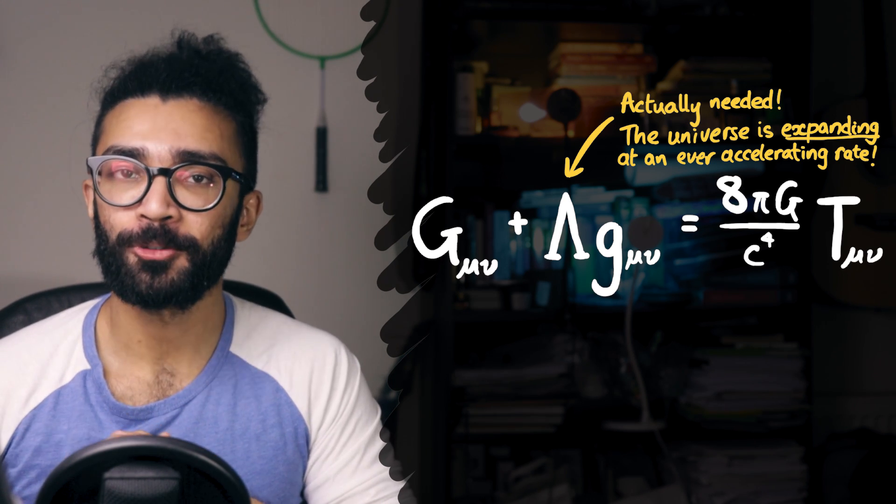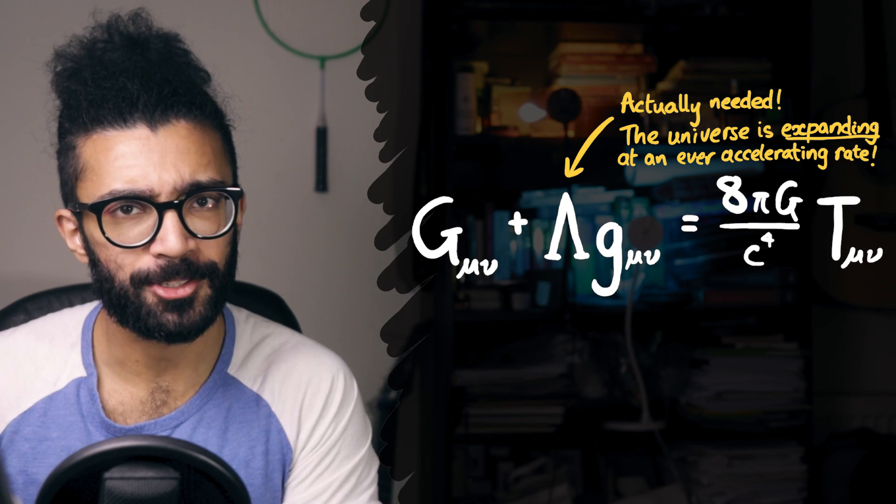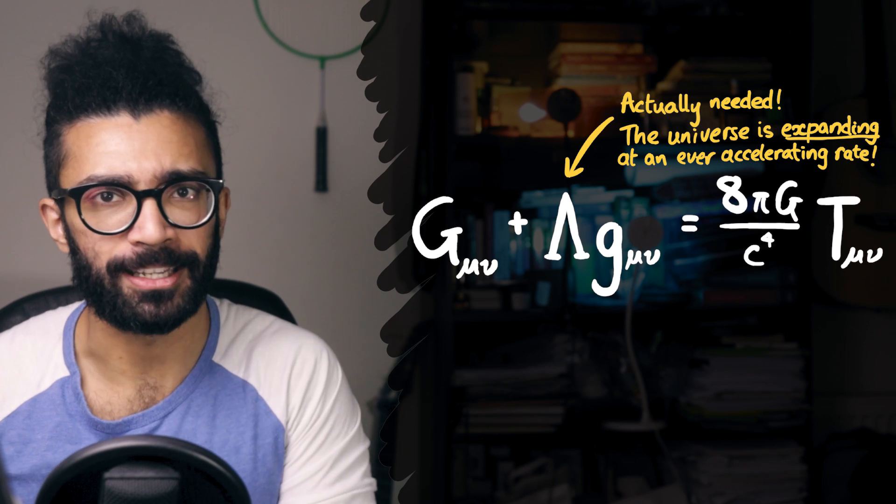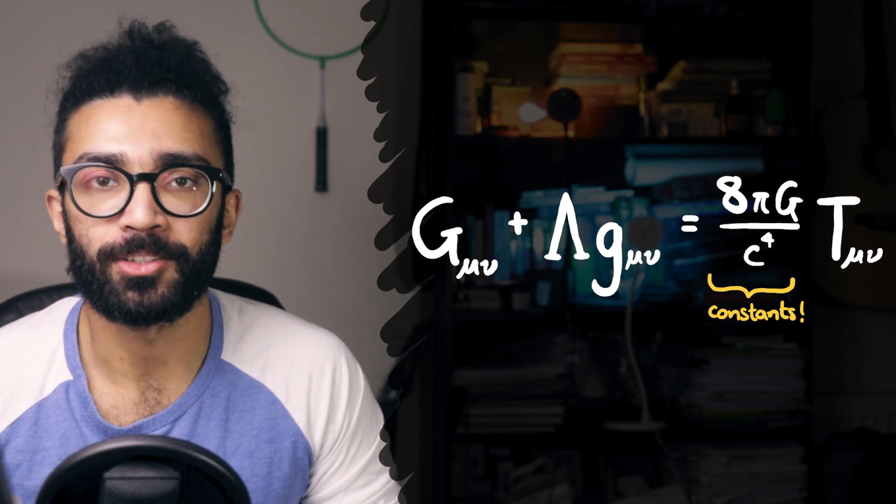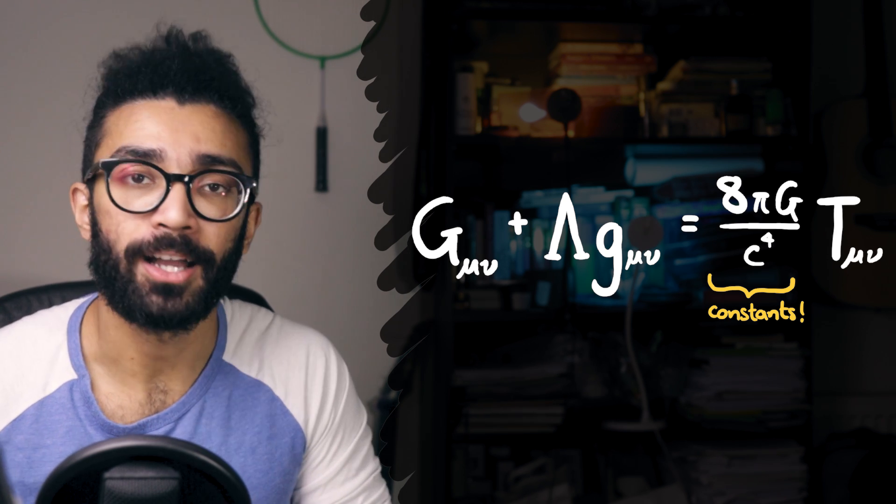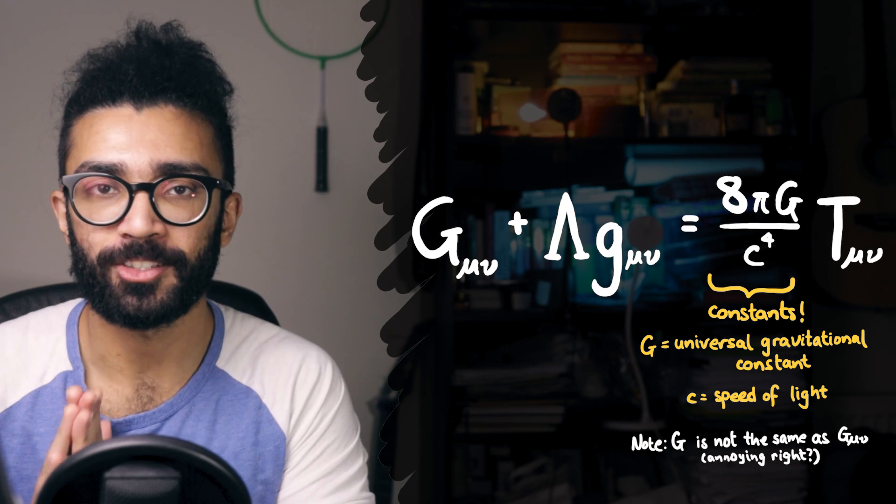Again, this deserves a video of its own, and I'd like to make that soon, so keep an eye out for that. How could I pass up the opportunity to talk about something that Einstein himself described as his own biggest blunder? Now, these other constants you may be familiar with. 8, hopefully you're familiar with, as well as pi and g, which is the universal gravitational constant, and c, which is the speed of light.